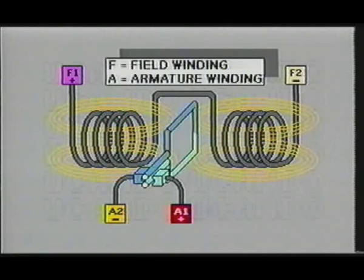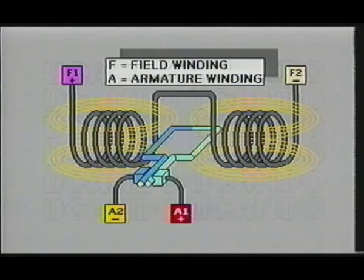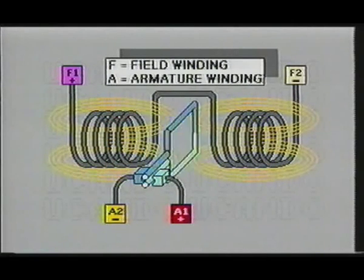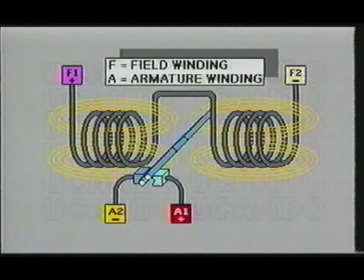Now notice that when the armature voltage is applied, the operation of the brushed DC motor is very similar to the permanent magnet brushed DC motor you just examined. One major difference, of course, would be that the magnets in the stator have been replaced with field windings.